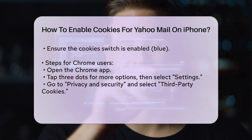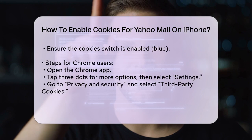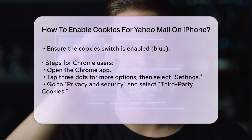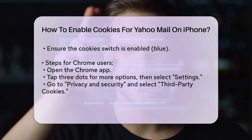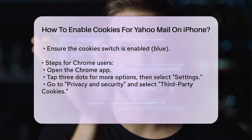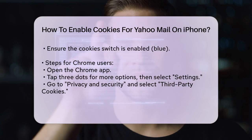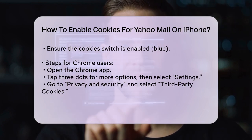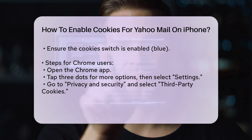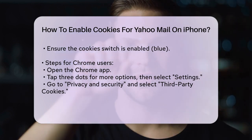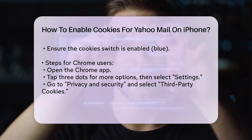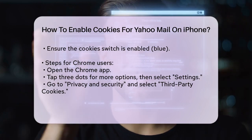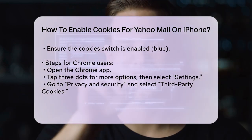For Chrome users, open the Chrome app on your iPhone. Tap the three dots (More) at the bottom right corner and then select Settings. Go to Privacy and Security, and then select Third Party Cookies. Choose the option to Allow Third Party Cookies. This will ensure that cookies are enabled in the Chrome browser, allowing you to access Yahoo Mail without any issues.